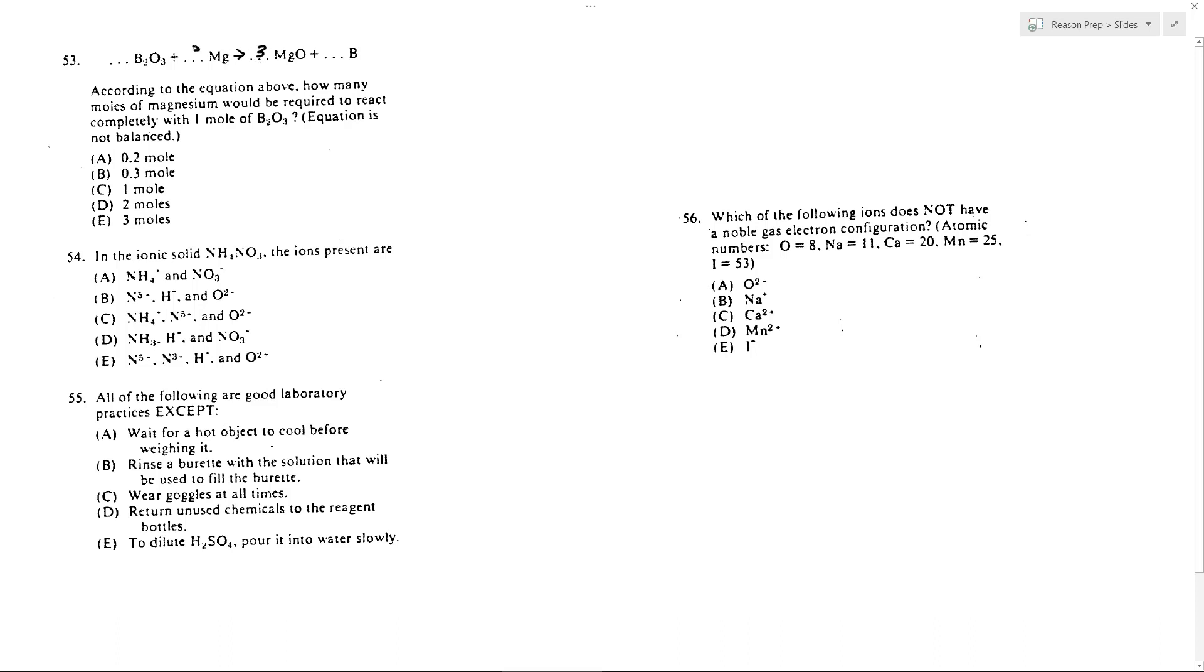Now we need to add a three to the magnesium so that we have three magnesiums on both sides. I've got two borons on the left, so I'm going to need a two to the boron on the right. And so now I'm balanced. How many magnesiums are going to react with one mole of B2O3? I can see it's a one to three ratio - for every one mole of B2O3, I need three moles of magnesium. And so that's why the answer to 53 is E.